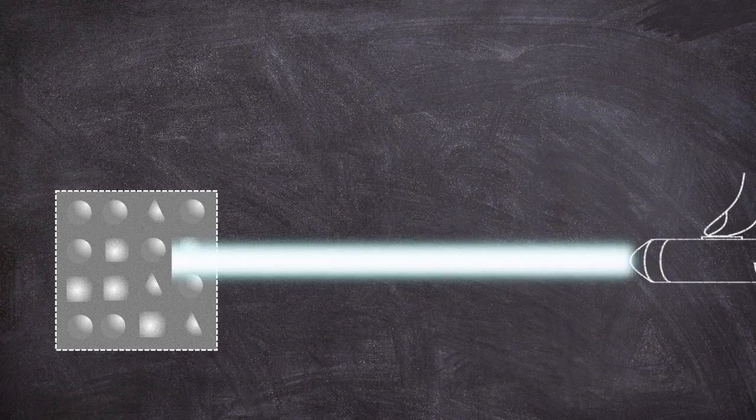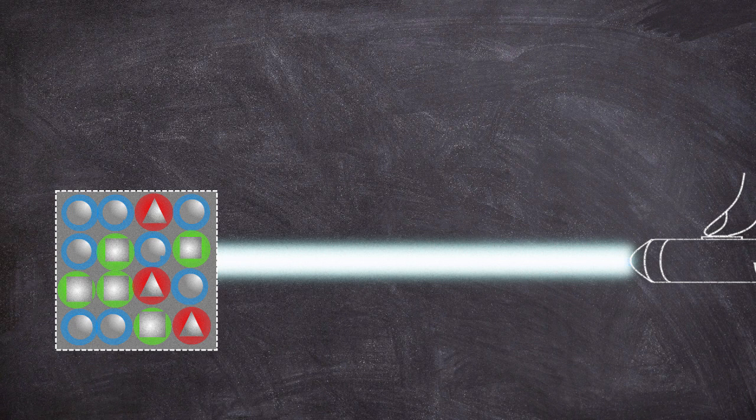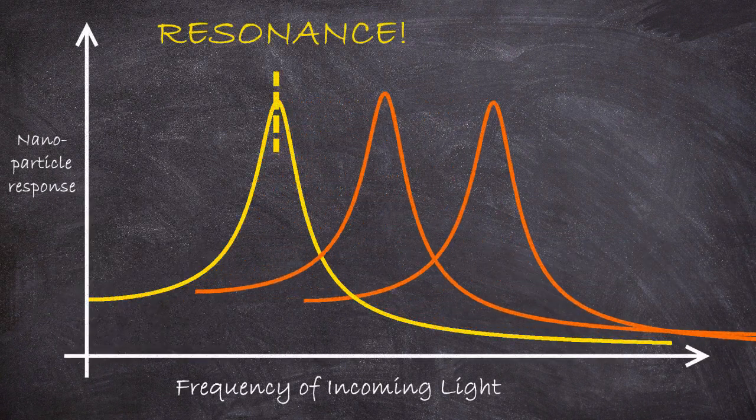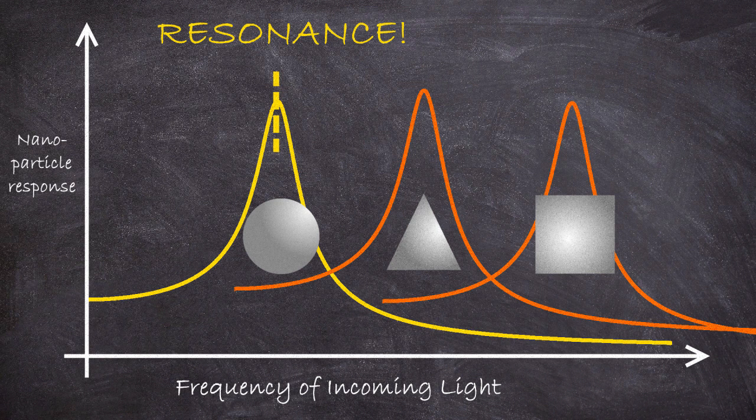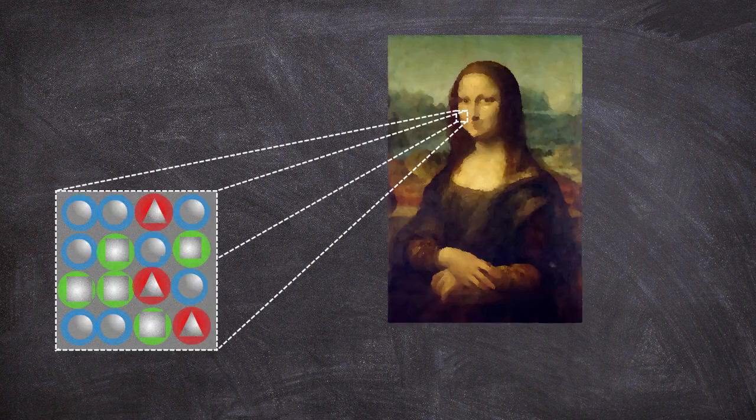In a nutshell, this means that when you have an array of these nanoparticles and you illuminate them with white light, you can tune how they reflect that light based on shape or environment alone. You can in fact create all the colors of the rainbow just by making little plasmonic nanodots all made of the same material, just with different shapes.